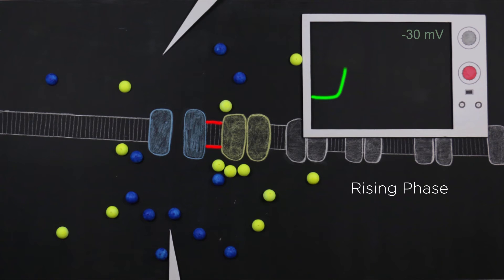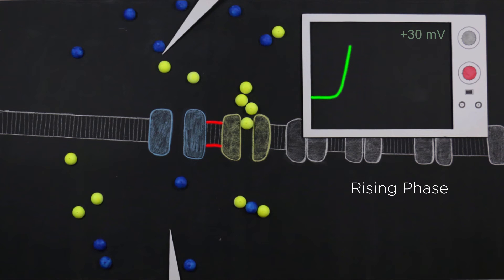Second, as the membrane potential is depolarizing due to the influx of sodium ions, the voltage-gated potassium channels open and potassium begins to leak out of the cell.